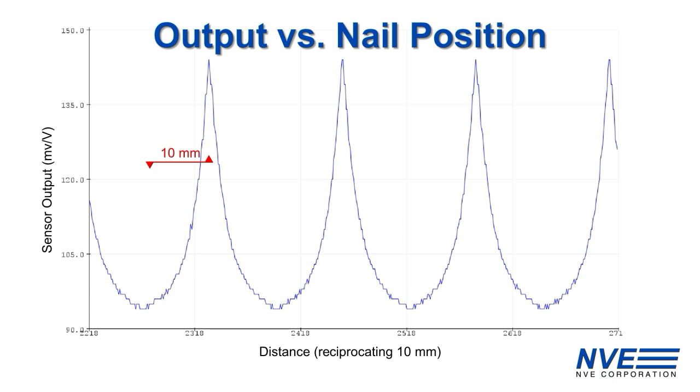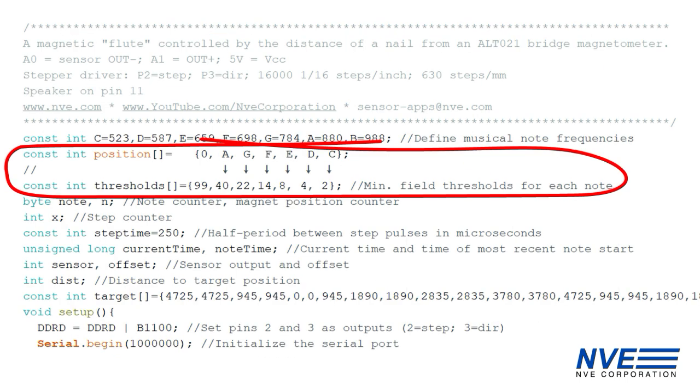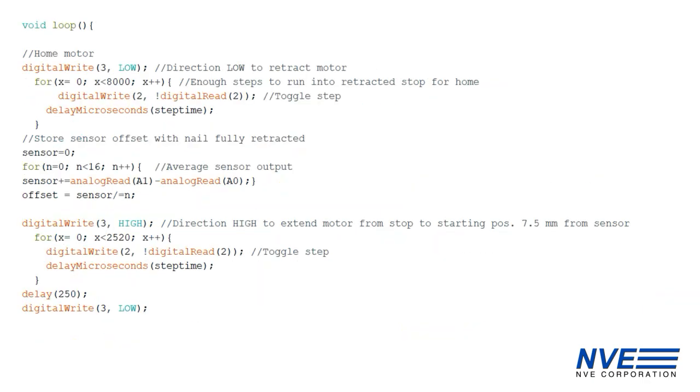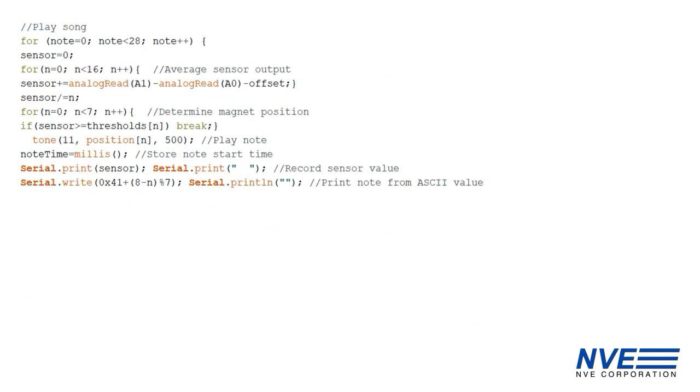We set the field thresholds to split this into 1.5 millimeter sections. The thresholds are stored as an Arduino lookup table.